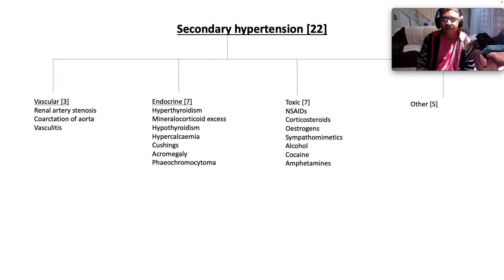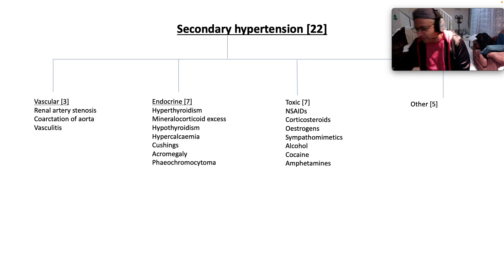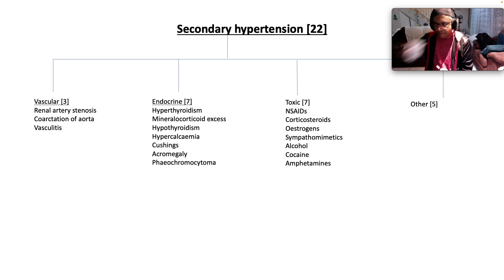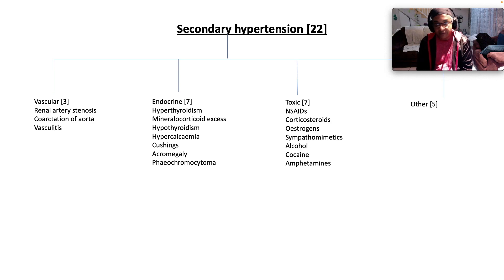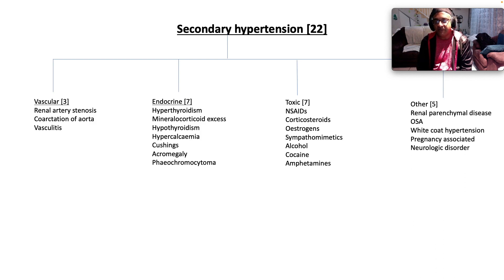Toxic causes include non-steroidals, corticosteroids, oestrogens, sympathomimetics — especially cocaine and amphetamines — and alcohol. Others include renal parenchymal disease — the chicken and the egg story: is the chronic kidney disease driving the hypertension, or is the hypertension driving the chronic kidney disease?